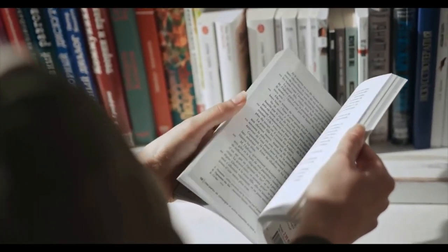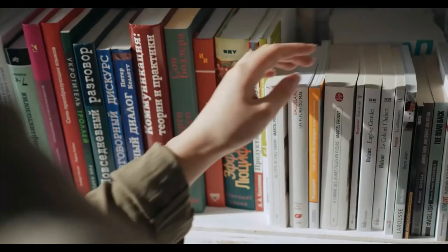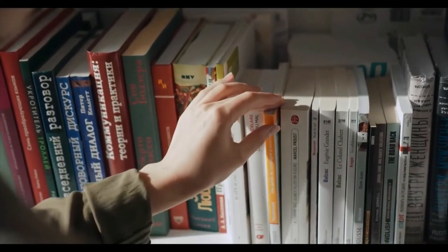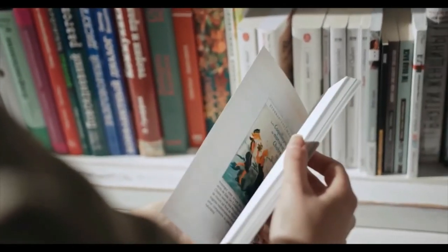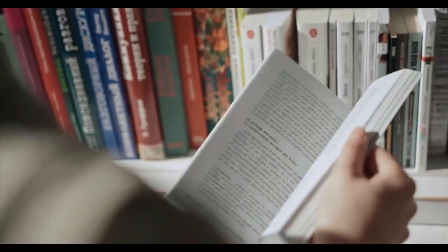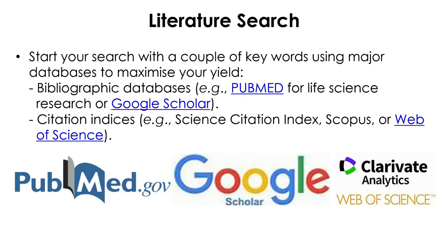Literature review will help you identify the most up-to-date information and the current state of affairs in the field or theme of your research. It will also help you find the gaps that have not been fully investigated or need more research. A successful literature review will help you refine or redefine your research hypothesis and scope. Before you review literature, you need to first search and collect as many relevant sources as possible and save them. In old days you would go to a library, but these days literature search is easier than ever thanks to the internet.